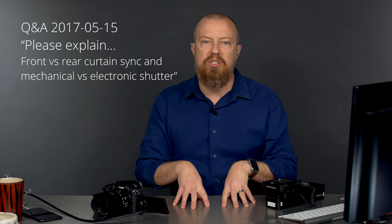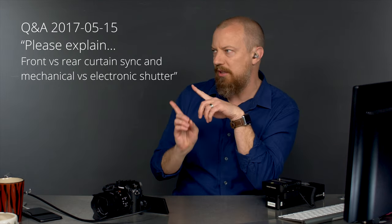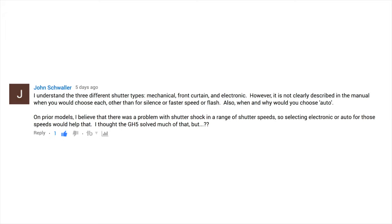This is a Q&A show, and you're watching one of three videos that will start off exactly the same, except with a different question. John Schwaller asks: I understand the three different shutter types — mechanical, front curtain, and electronic. However, it's not clearly described in the manual when you would choose each, other than for silence, faster speed, or flash. Also, why and when would you choose auto? He also notes that in prior models, there was a problem with shutter shock at certain shutter speeds, and selecting electronic or auto for those speeds would help. That is correct — I thought the GH5 solved much of that.